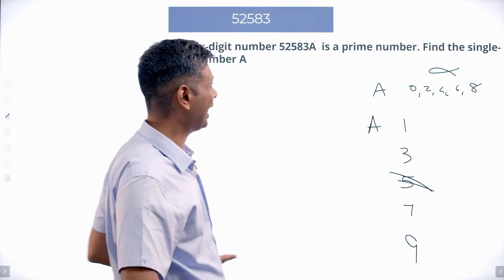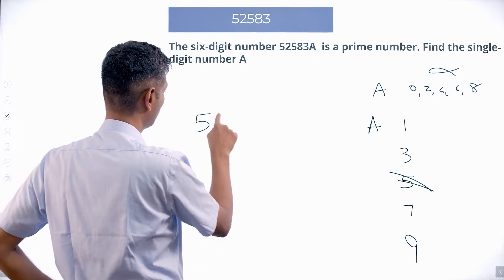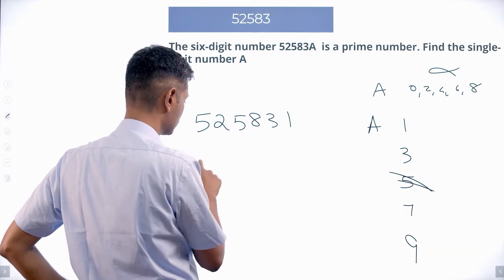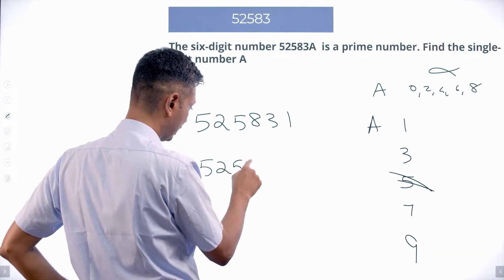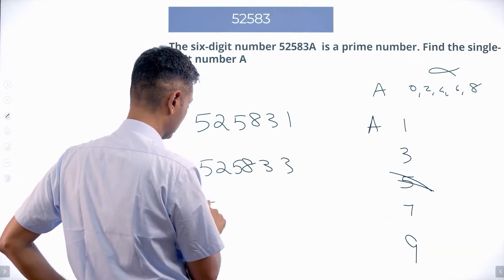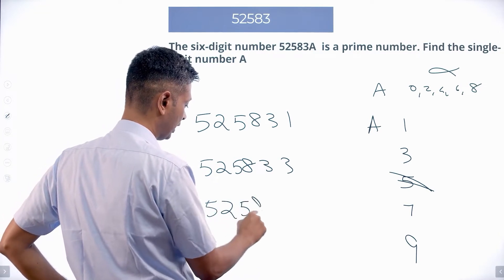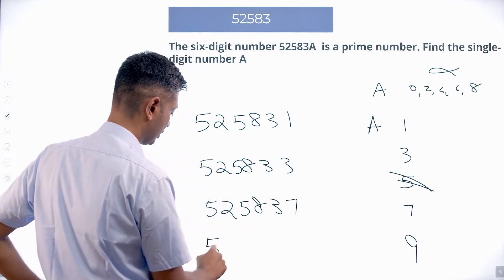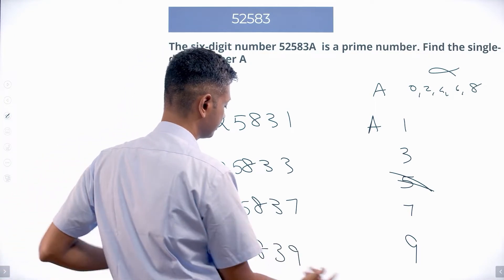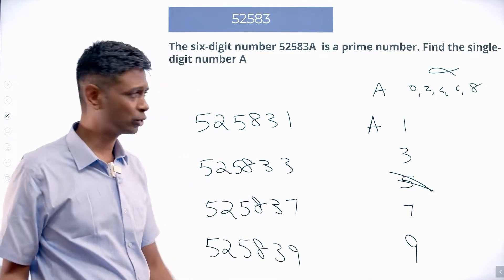So all I have is to say this number could be 525831, 525833, 525837, or 525839. One of these should work. One of these should be prime.